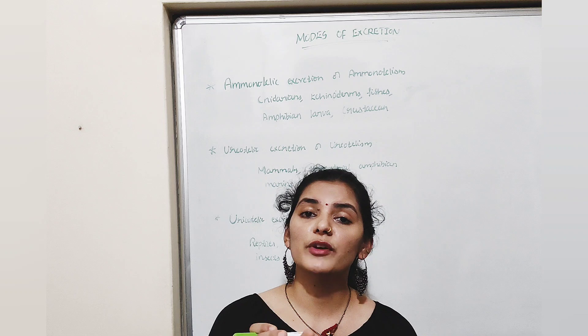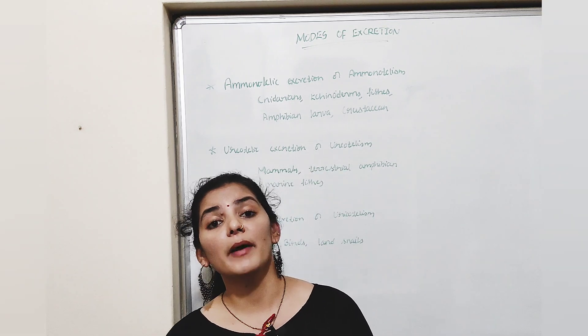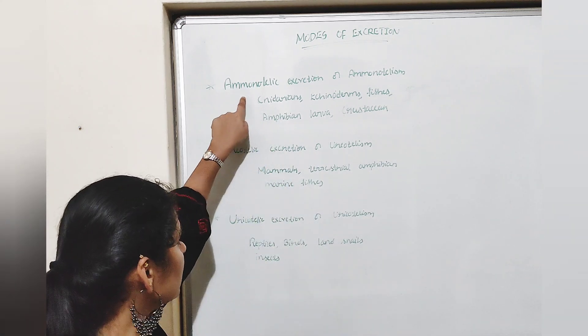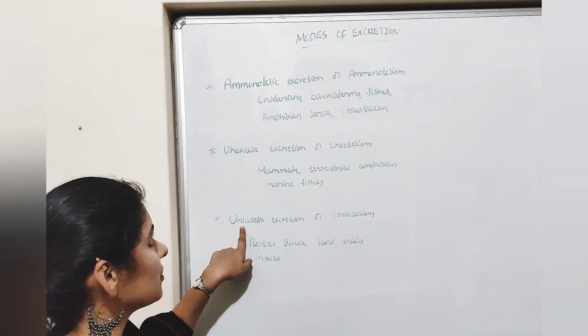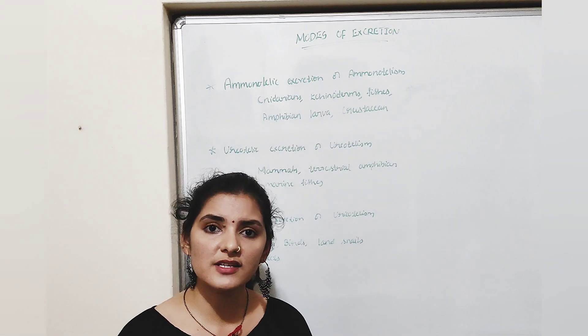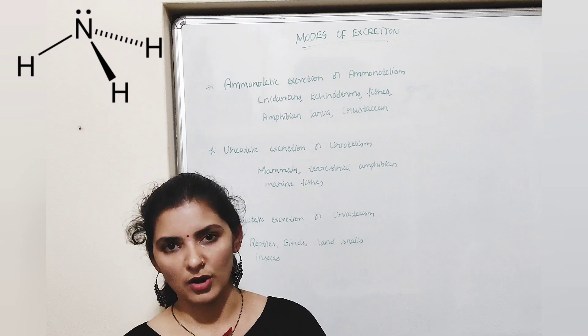Based on the type of waste product or excretory product released from the body by different animals, there are three types: ammonotelic, ureotelic, and uricotelic. Ammonotelic excretion or ammonotelism is a process by which nitrogenous waste is excreted in the form of ammonia.